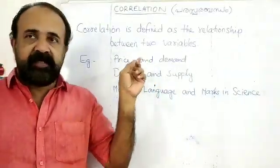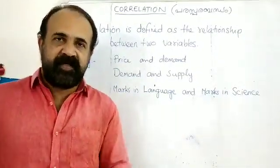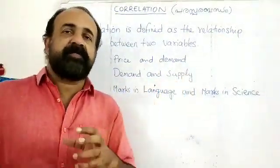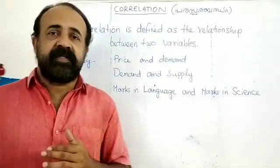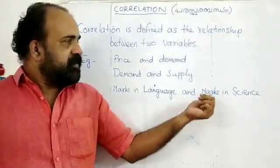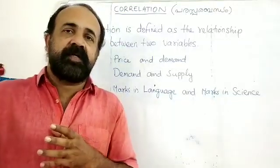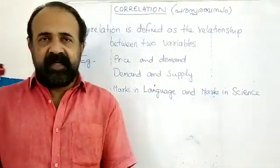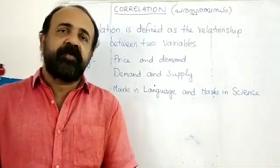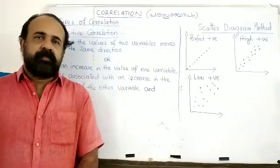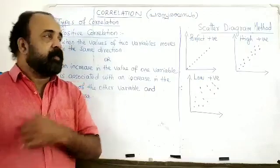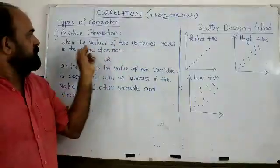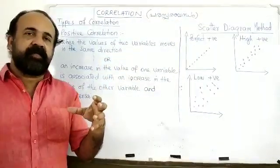An example of correlation is Price and Demand. The next topic is types of correlation. Positive correlation is when the values of two variables move in the same direction.